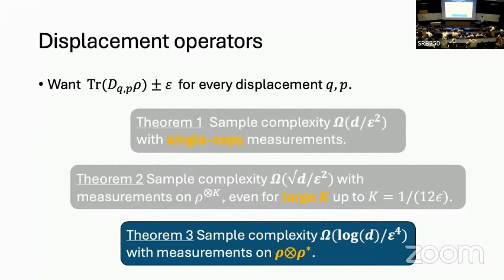Q: Do you study the regime where d is large but you have a fewer number of observables, like k much less than d²? A: I'm saying I want all d² of them. If you pick a commuting set, then it's quite easy. It depends on the set. You might expect a log d, log k type scaling, but you can't show that in general because if they're commuting, the situation is different.